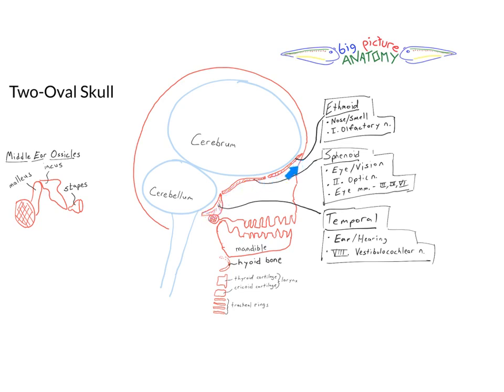And the way to think about this to make it simple, at least initially, is that there are three bones: the ethmoid, sphenoid, and temporal bone. The ethmoid is the most anterior one, the sphenoid is the one that's in the middle, and the temporal bone is more posteriorly.